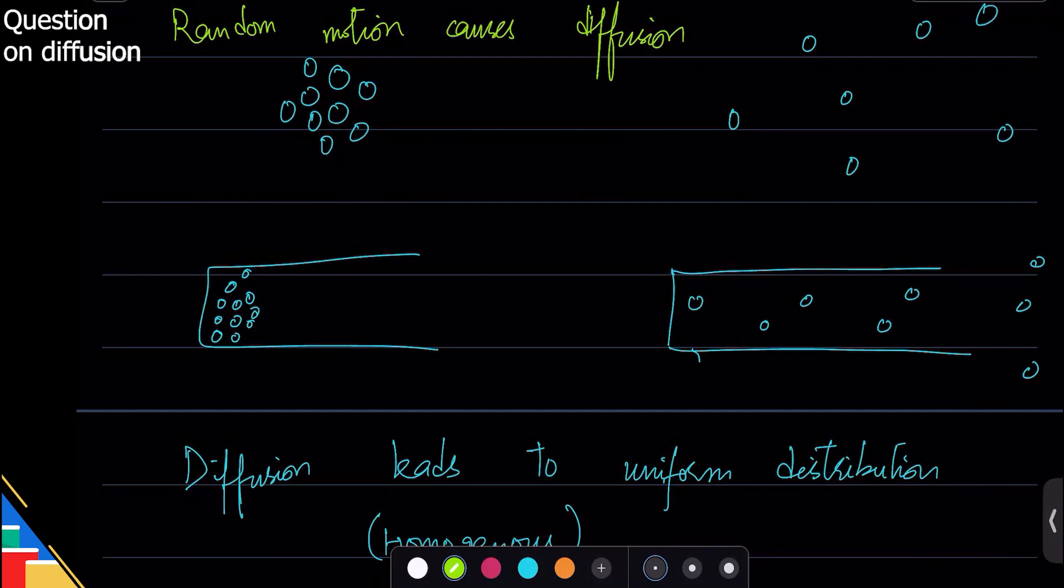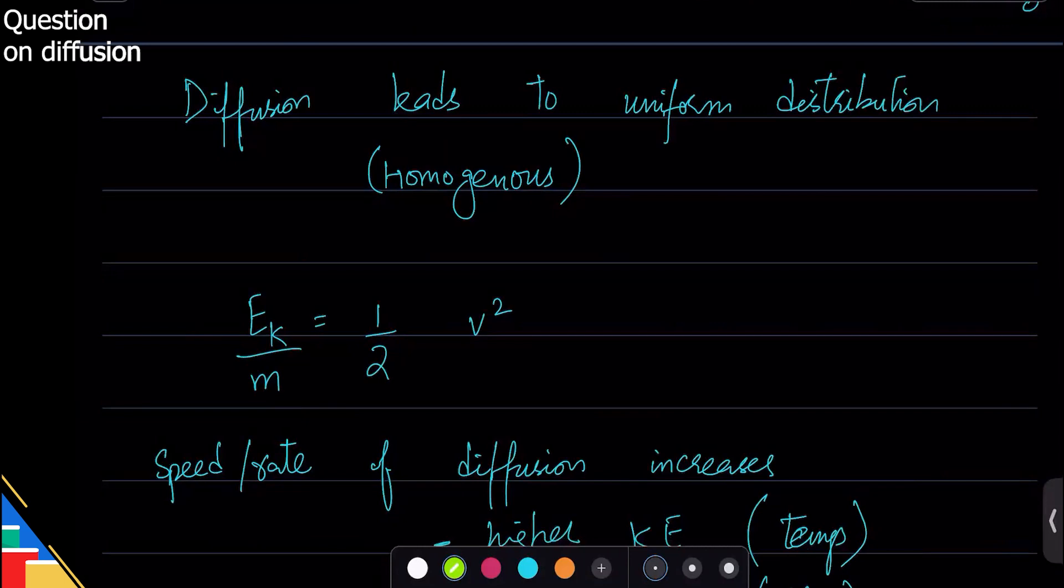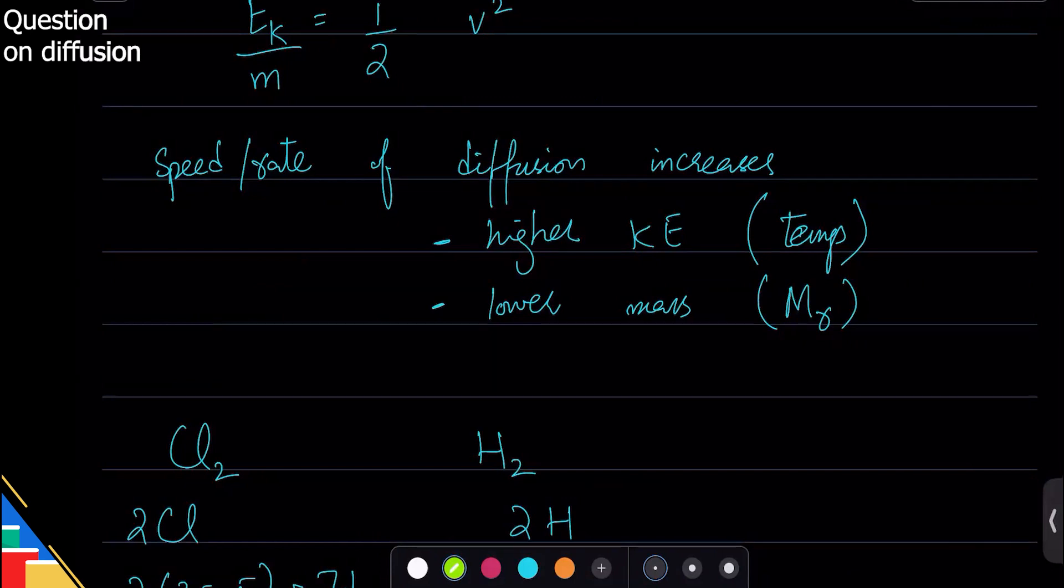What is the eventual goal of diffusion? Homogeneity, everything distributed uniformly. What factor affects it? The higher kinetic energy and the lower mass.